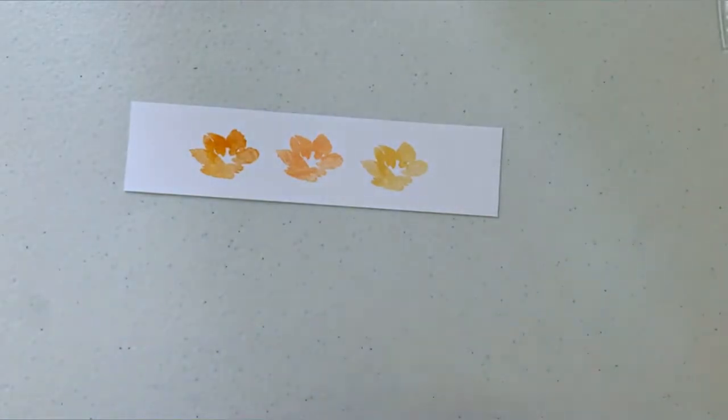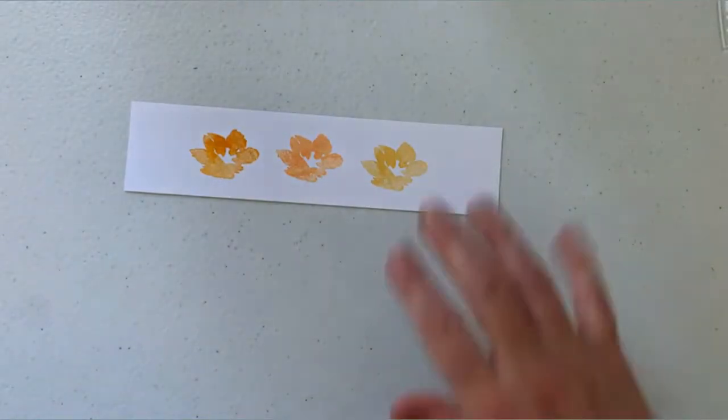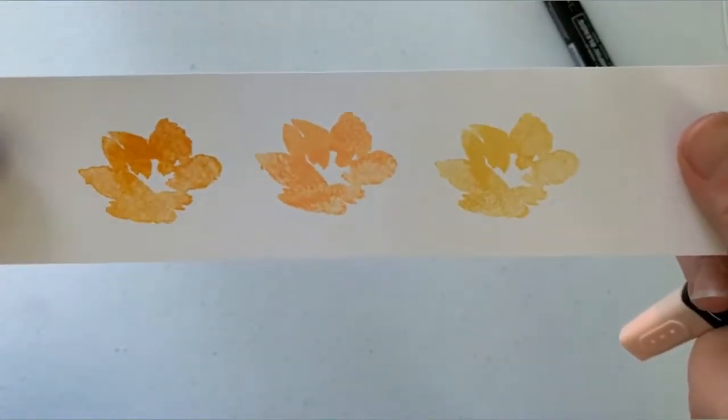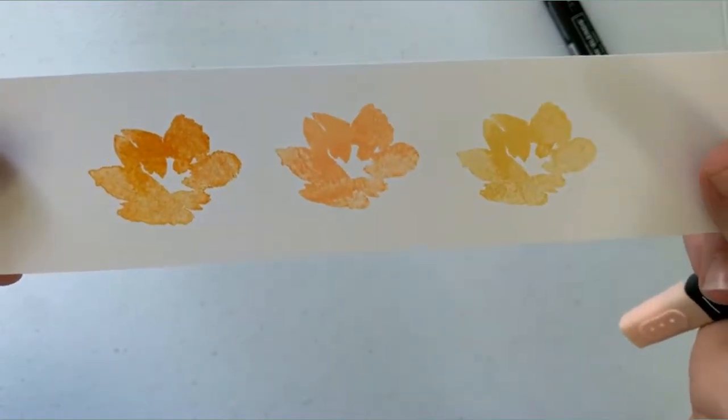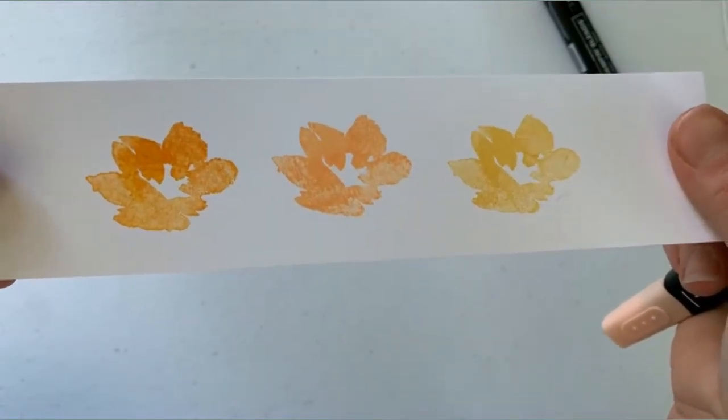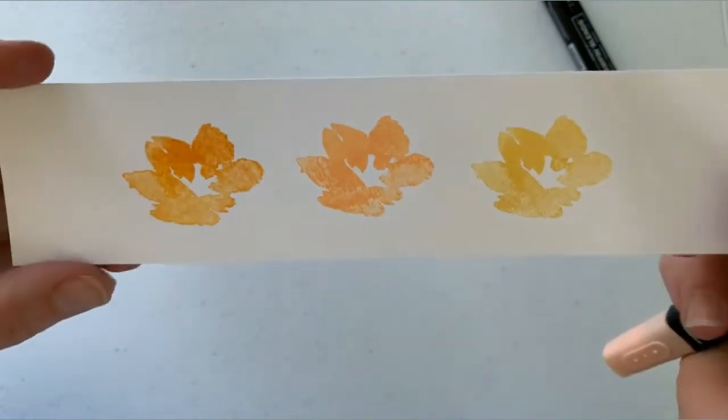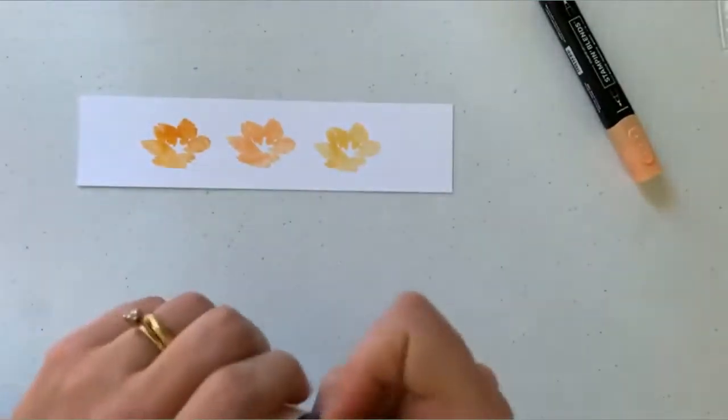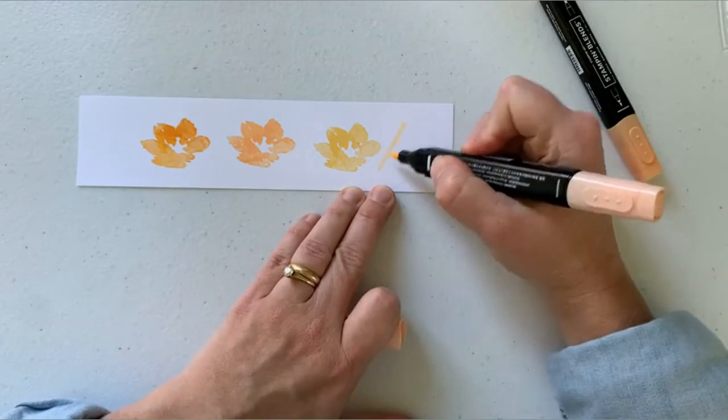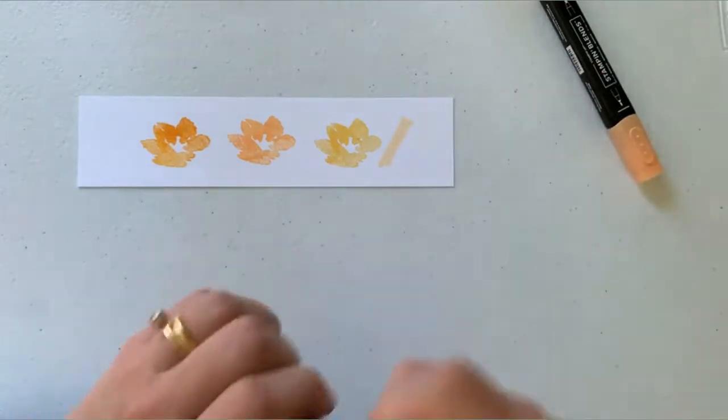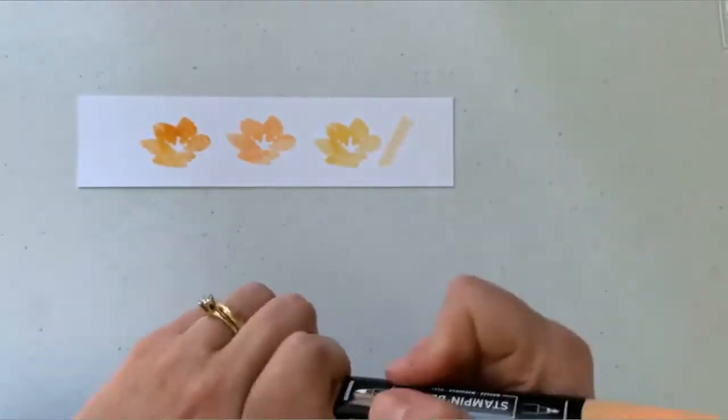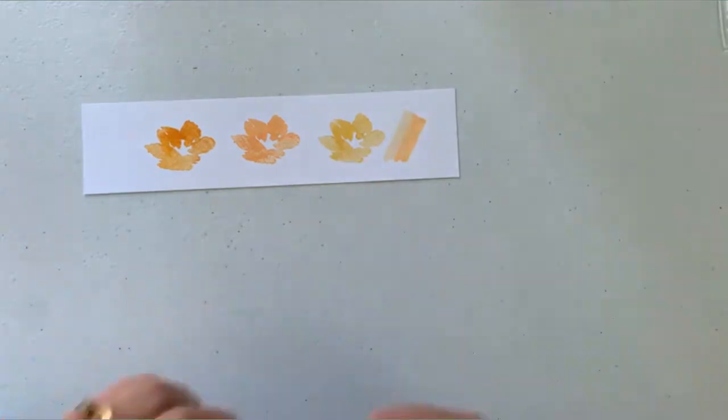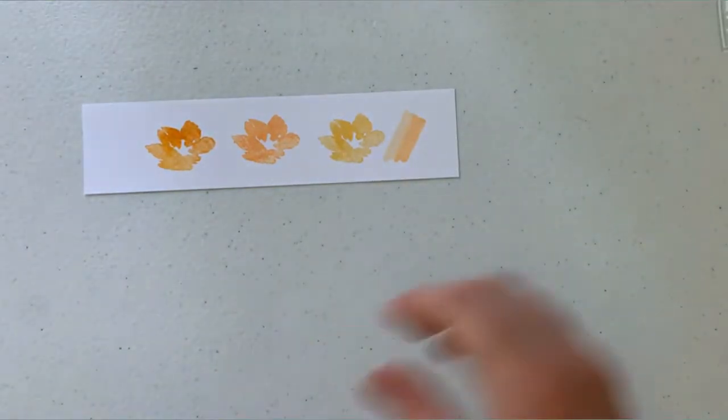Karen called it peach and I think that's a good descriptive of it. Here's the light Stampin' Blends and then the dark Stampin' Blends. Peach is like the perfect descriptive word for it, it's very much a peach. Very pretty.